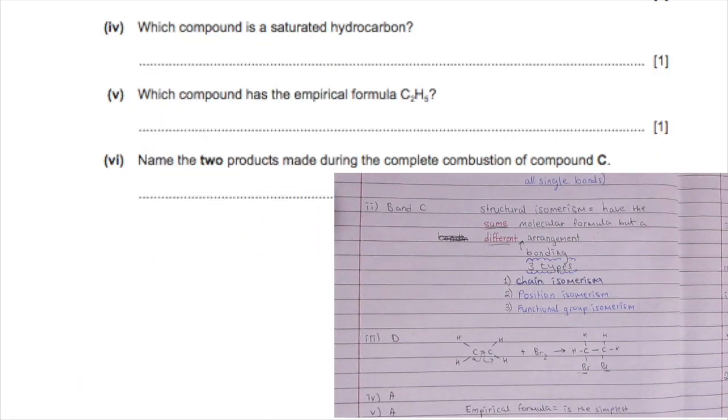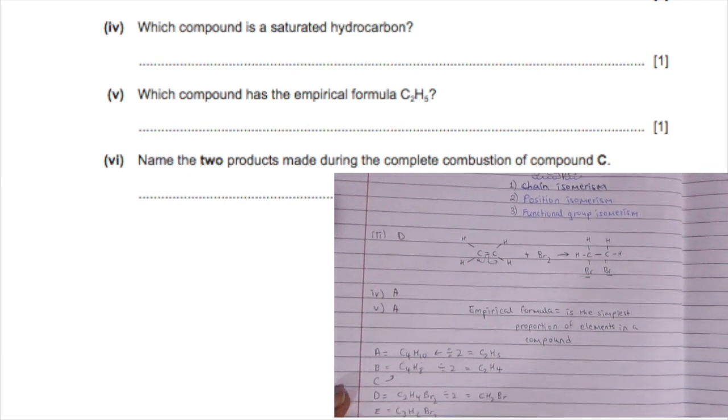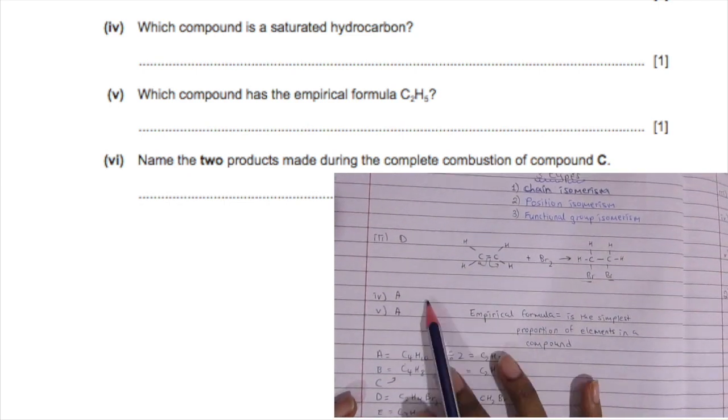Which compound is a saturated compound? Again, that would be A because it has no double bonds or triple bonds. It's a hydrocarbon because it only has hydrogen and carbon.